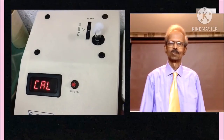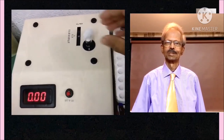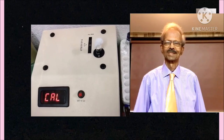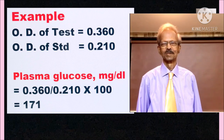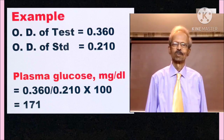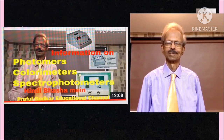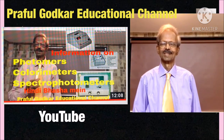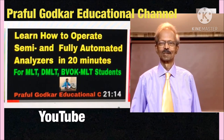While taking readings on the photometer, test and standard readings are noted by setting blank readings to 0 optical density. For example, if the optical density of the test is 0.360 and that of the 100 mg% glucose standard is 0.210, then mg% glucose in plasma equals 171. Please refer to my videos on use of photometers and semi-auto-analysers on Prof. Ghodkar Educational Channel on YouTube.